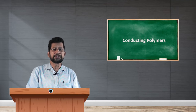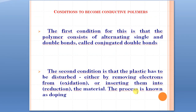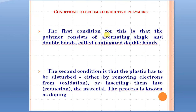There are two conditions to become a conducting polymer. The first condition is that the polymer consists of alternating single and double bonds — that is called conjugated double bonds. If the polymer contains conjugated double bonds, then it can become a conducting polymer. The second condition is that the polymer has to be disturbed — that is, either by removing electrons or by inserting electrons, meaning by carrying out an oxidation reaction or a reduction reaction. This process is called doping.